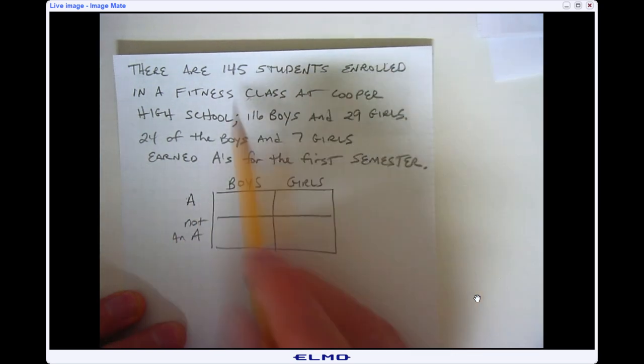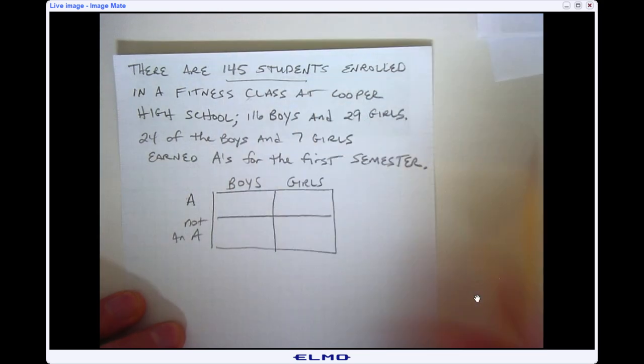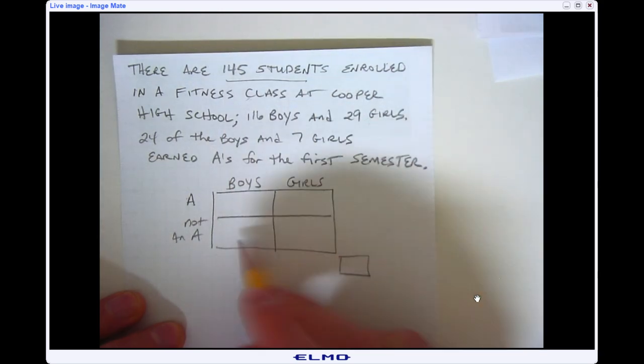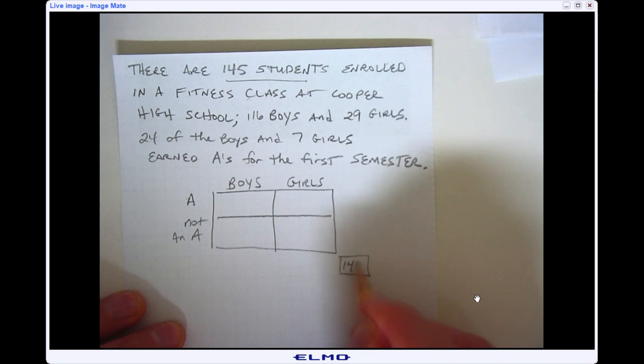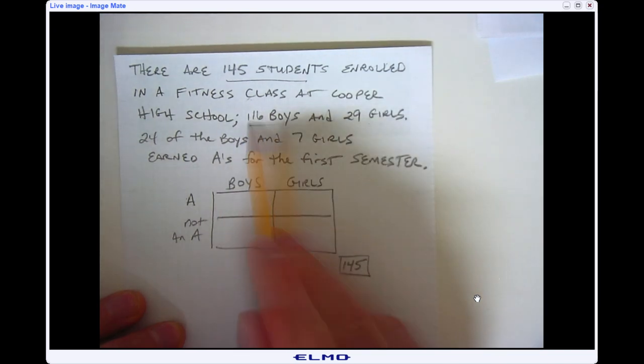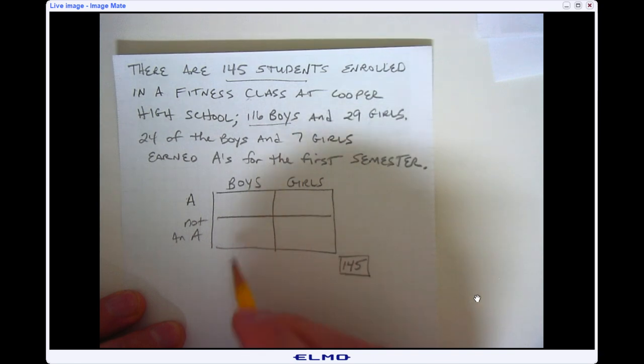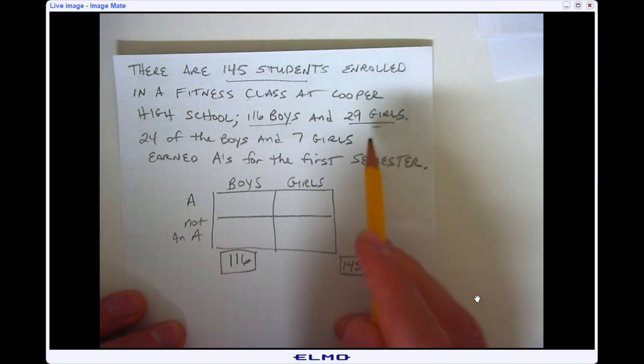Again from the clue it says there are 145 students in the class so my total for all of my rows and columns should be 145. It said there were 116 boys in the class so here's boys so a total for that should be 116, and there were 29 girls in the class. So when I go to girls that should be 29, that should make sense that 29 plus 116 is 145.